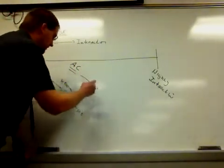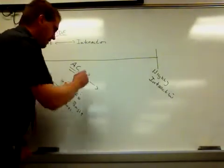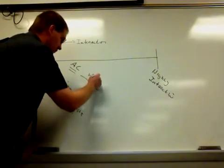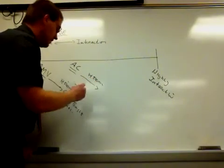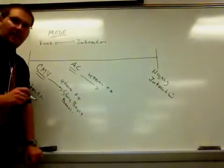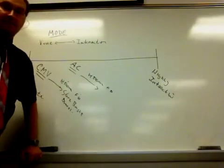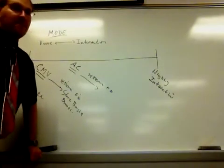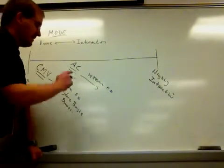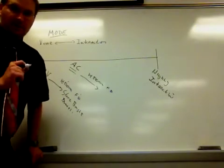Assist control is just like CMV in that I have a mandatory tidal volume. We'll keep it in volume control, but it could be pressure and a rate. If I set tidal volume and a rate in assist control, that patient will get that tidal volume and will get that 10 breaths a minute that we set. That is mandatory. The patient has to get that.